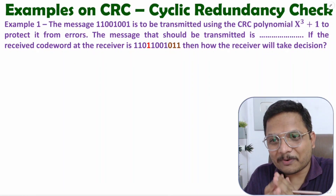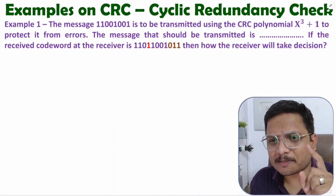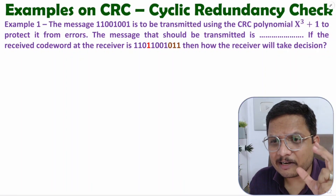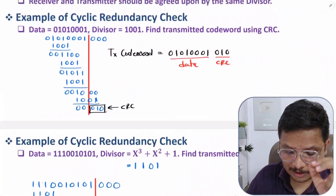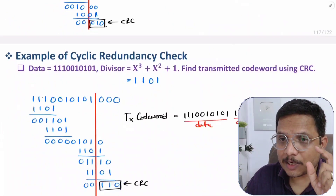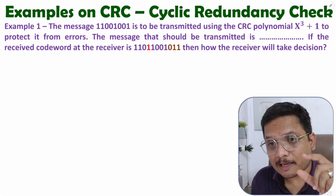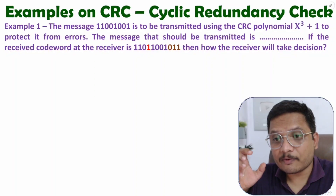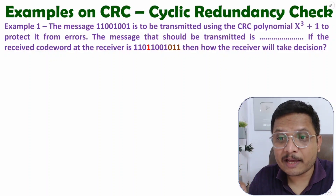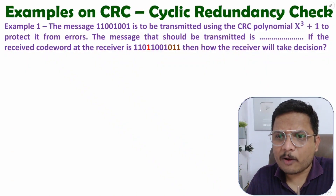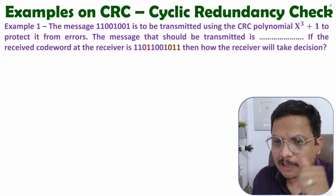Hello friends, welcome to Engineering Funda Family. In this video I am going to explain a comprehensive example based on cyclic redundancy check. In my previous video I solved two questions based on CRC calculation. In this video I'll explain CRC calculation as well as how a receiver identifies whether there is an error in the received code word. I'll explain everything in great detail along with this example.